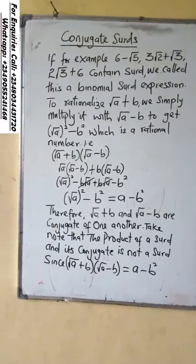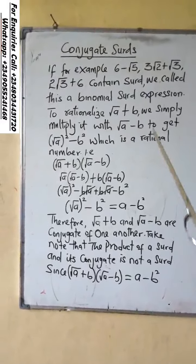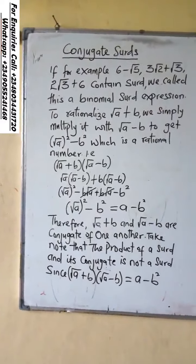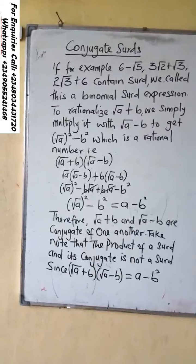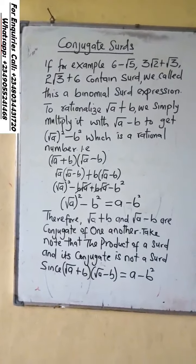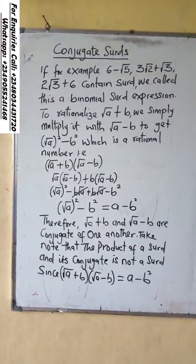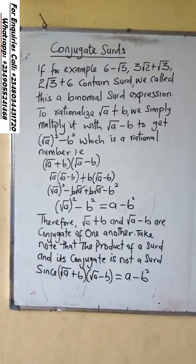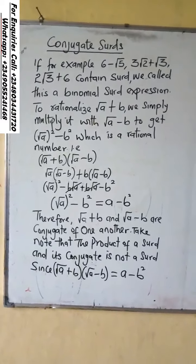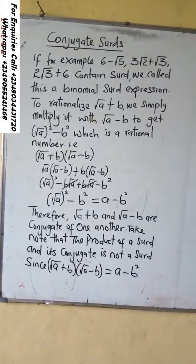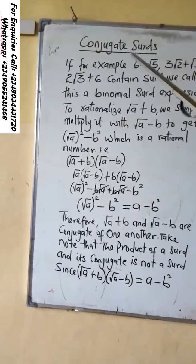Conjugate surd: if for example we have 6 minus root 5, 3 plus 2 plus root 3, and 2 root 3 plus 6. If it contains surd, we call this type of surd a binomial surd expression. The way it is, it is a binomial surd expression.